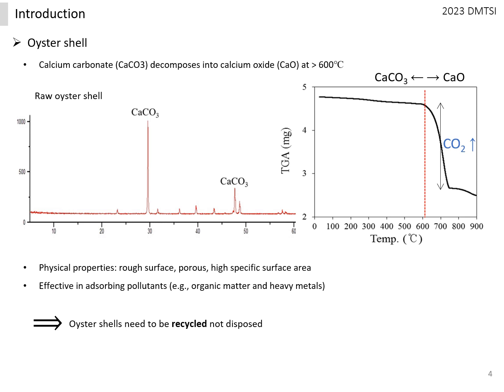This pyrolysis temperature varies from study to study, but it is approximately 750 to 800 degrees Celsius. Calcium oxide has a lower solubility than calcium carbonate, so calcium ions are easily eluted from water. Calcium ions dissolved in pore water in sediment cause chemical reactions with various substances.